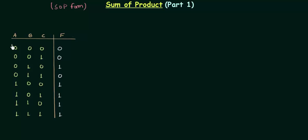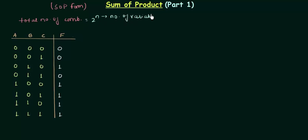You can see one truth table in front of you in which there are three variables A, B, and C. The total number of combinations is equal to 2 to the power N, where N is the number of variables. Here N is 3, so 2 to the power 3 gives us 8 combinations, starting from 0,0,0 all the way to 1,1,1. F is the output of this truth table, and I have already written the value of the function for these different combinations.